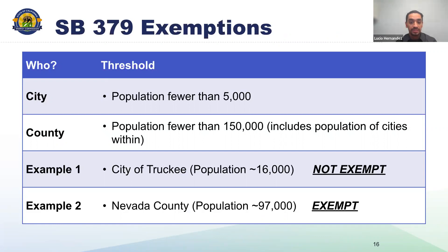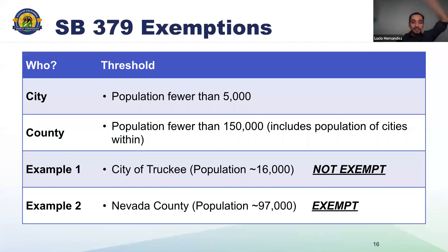Exemptions to SB 379 apply based on population sizes. For cities, those with a population less than 5,000 are exempt. For counties, any with a population less than 150,000 are exempt. For example, the City of Truckee is not exempt with a population of around 16,000, but Nevada County is exempt with a population of around 97,000.